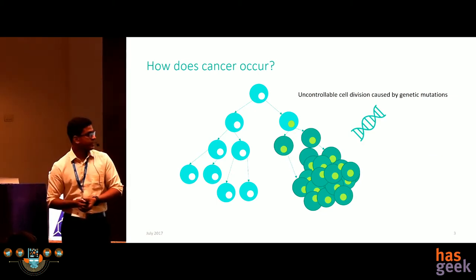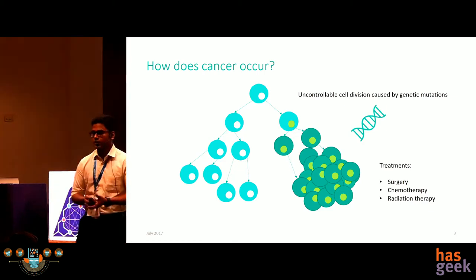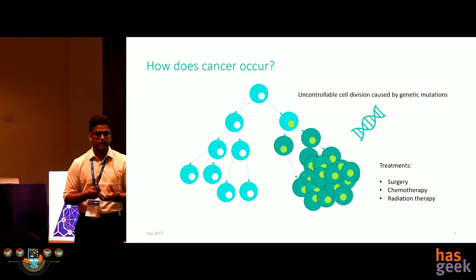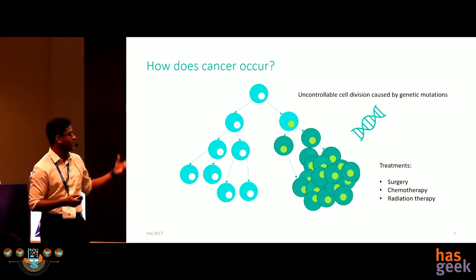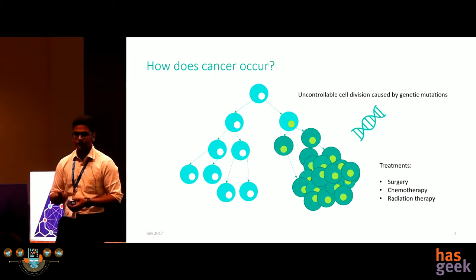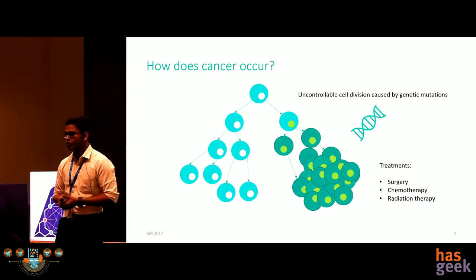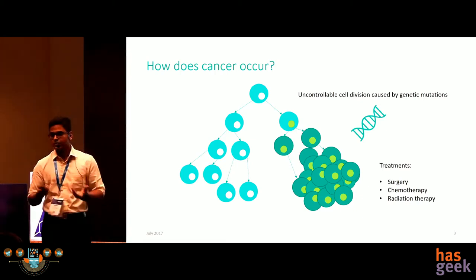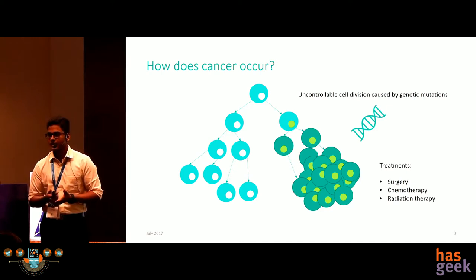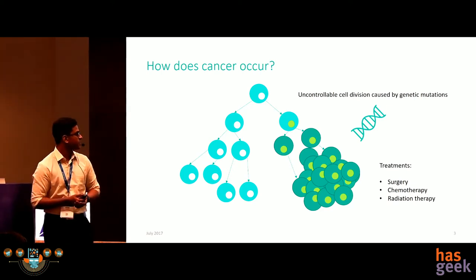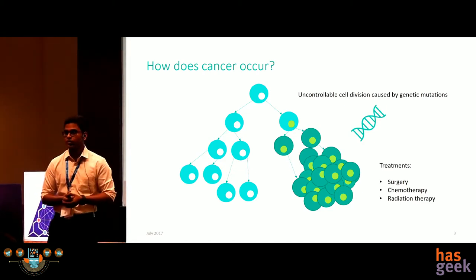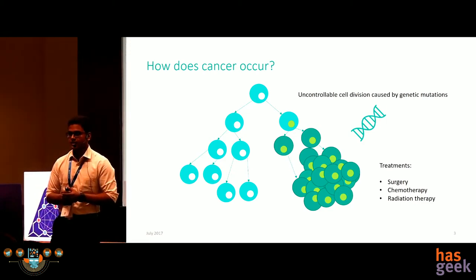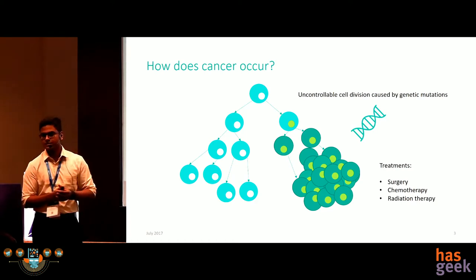To treat cancer, you either remove the cancerous mass using surgery, or you deliver toxic chemotherapy drugs which try to kill cancer cells — but the adverse effect is that chemotherapy kills normal cells too, which is why cancer patients lose hair and become sick. Radiation therapy delivers targeted high-concentration X-ray doses to try to kill the cancer cells.